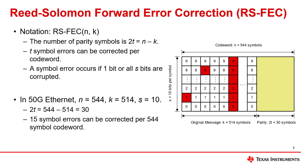In 50 gigabit Ethernet, RSFEC is implemented with 10-bit symbols and 544-symbol code words, where 514 symbols make up the original message. With these parameters, 15 symbol errors can be corrected per 544-symbol code word. RSFEC is implemented in 50 gig Ethernet because the inclusion of PAM4 modulation reduces the signal-to-noise ratio. 50 gig Ethernet can allow a higher bit error rate threshold than previous generations because RSFEC can correct many errors.